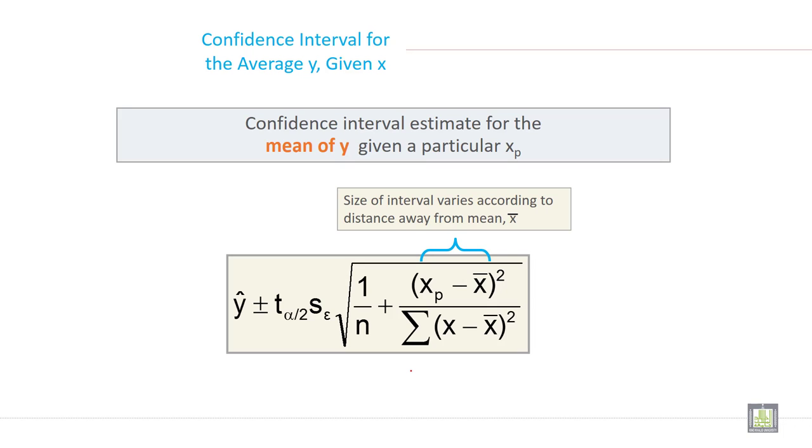Confidence interval estimate for the mean of y given a particular x. Size of interval varies according to distance away from mean x bar. The formula is y cap plus minus t alpha by 2 times standard error times square root of 1 by n plus xp minus x bar squared divided by summation of x minus x bar whole squared.